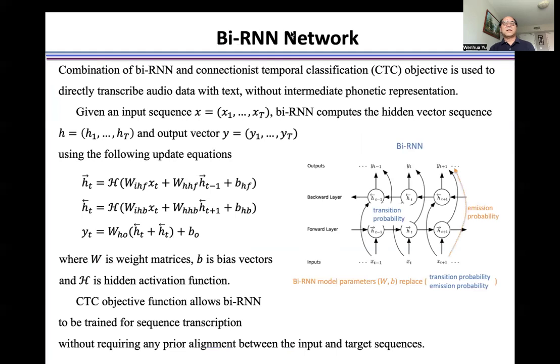Combination of bidirectional recurrent neural network and connectionist temporal classification objective is used to directly transcribe audio data with text without intermediate phonetic representation. Given an input sequence X, bidirectional RNN computes the hidden vector sequence H and output vector Y using the following update equations.